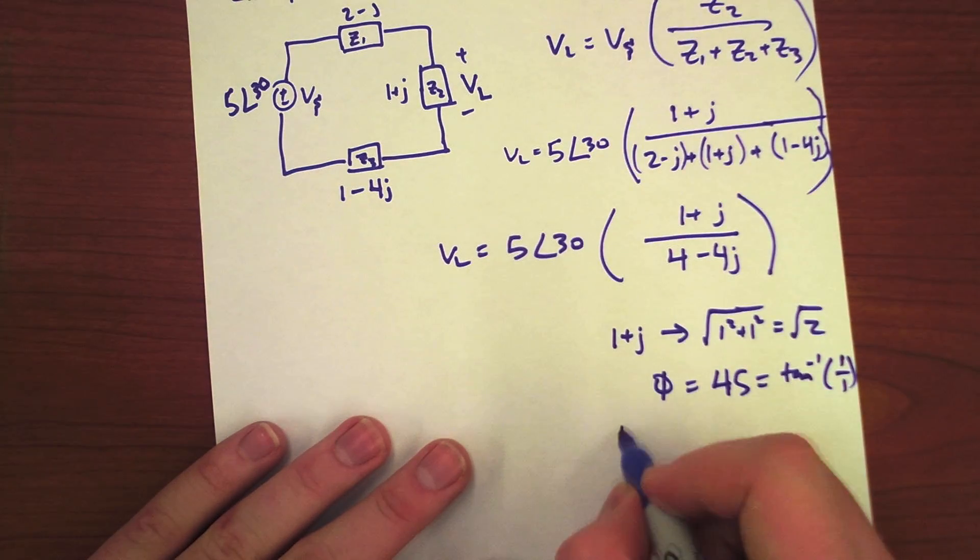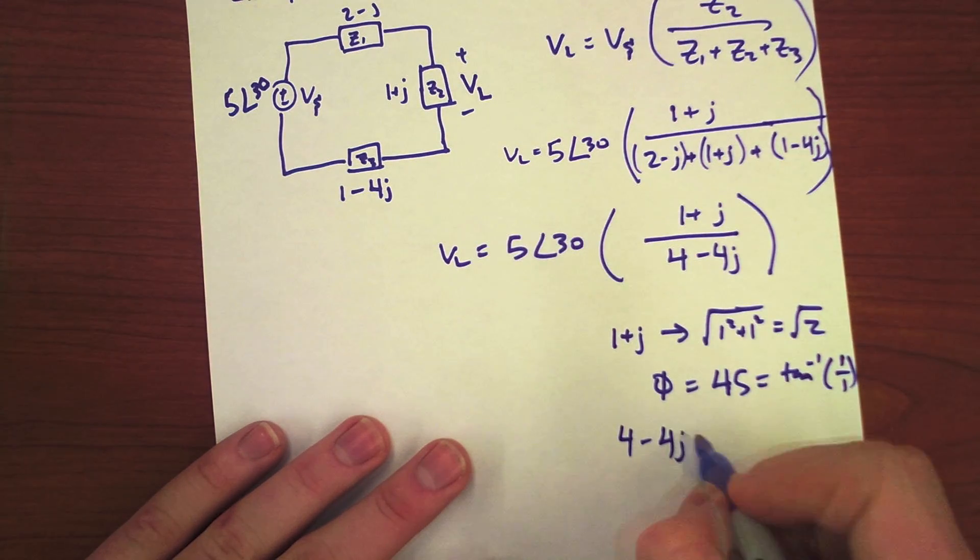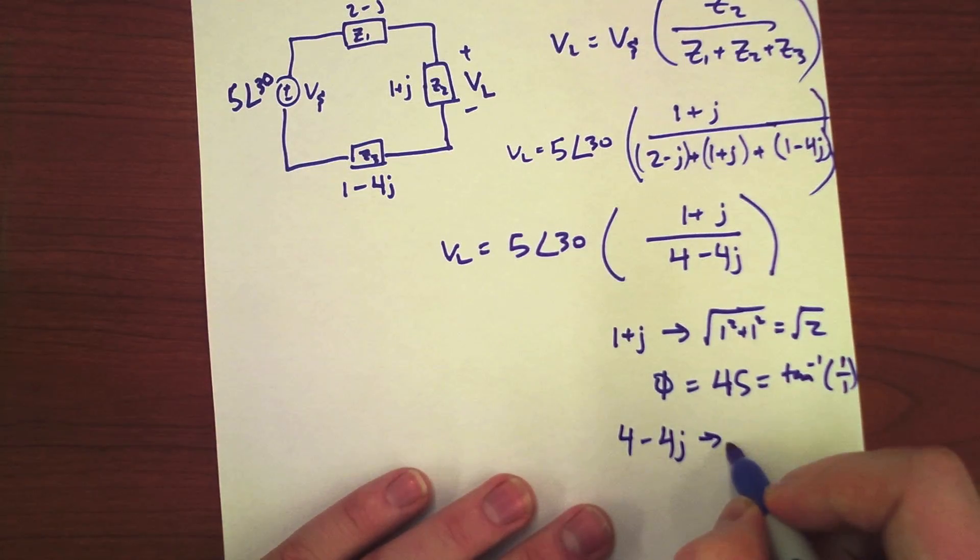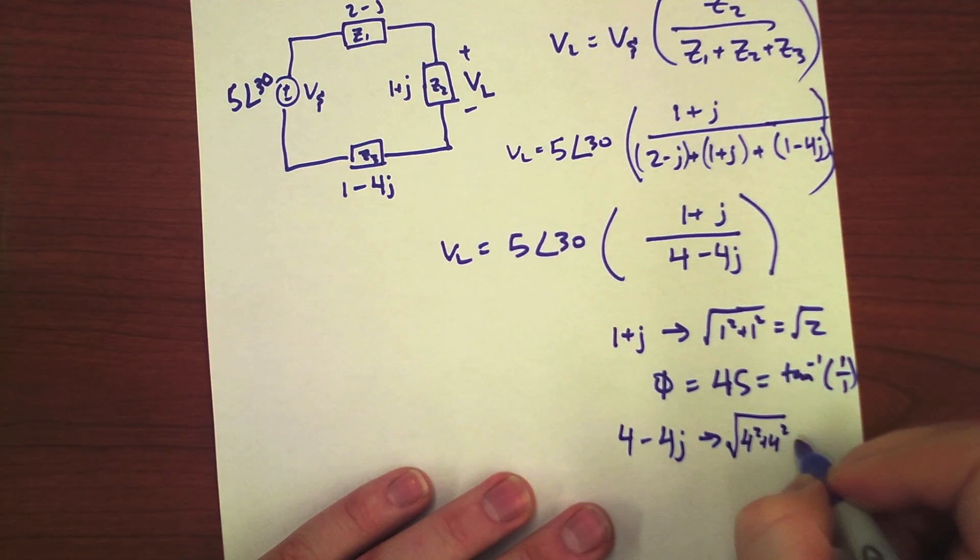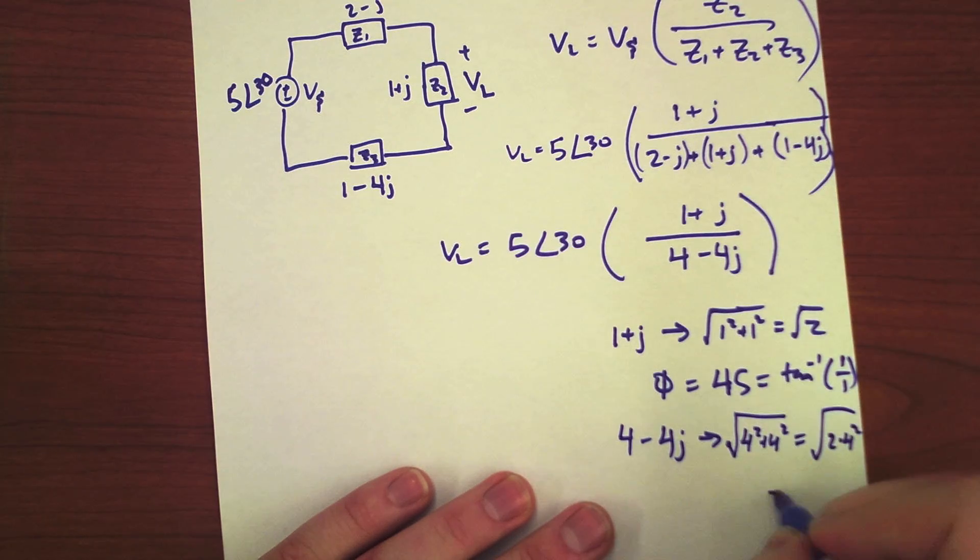And then, 4 minus 4j. We know that's square root of 4 squared plus 4 squared, that's just 2 times 4 squared, which is 4 radical 2.